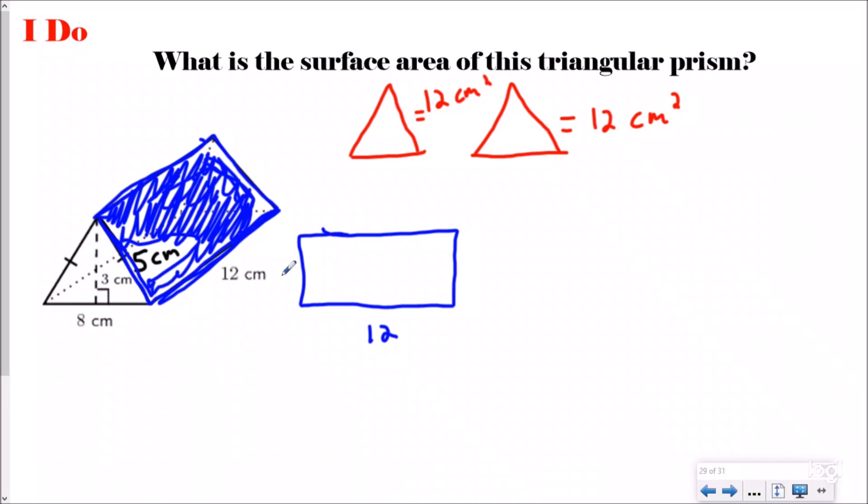The width of that face I have labeled as 5, so that's going to be 5 centimeters. When I multiply that together, using my area formula for a rectangle, this is going to be 60 centimeters squared.